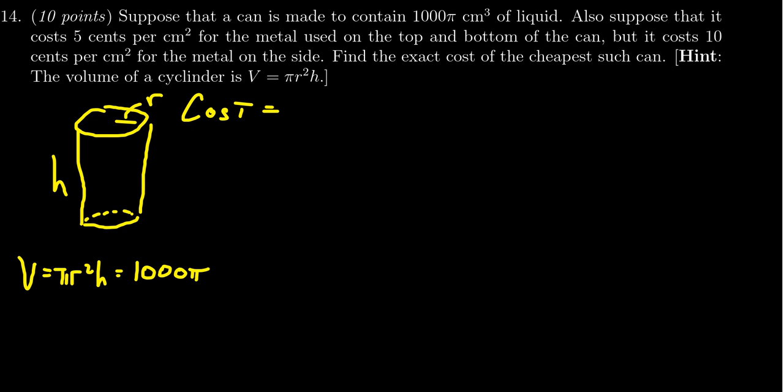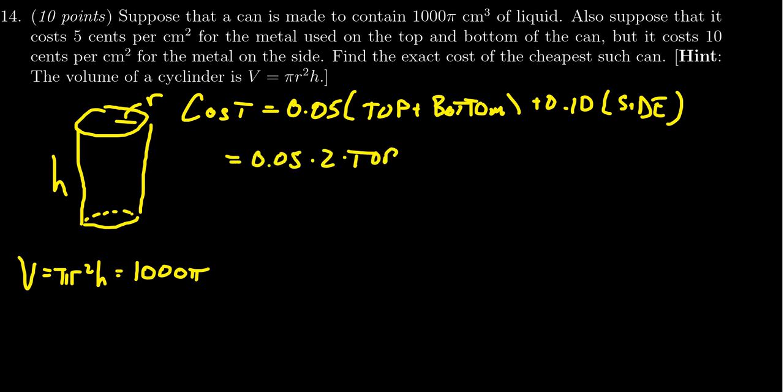The cost will be 5 cents times the area of the top plus the area of the bottom, plus 10 cents times the area of the side. Since it's a cylinder, the top and bottom are both circles with the same area. So we get 0.05 times 2 times the area of the top plus 0.10 times the area of the side. Five cents times 2 is 10 cents, so we need to figure out the area of the top plus the area of the side.